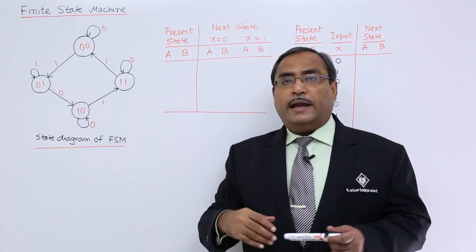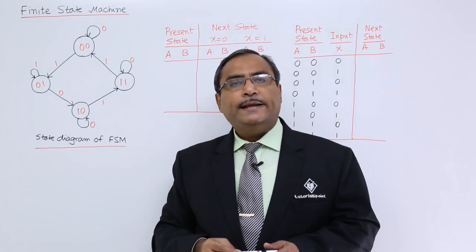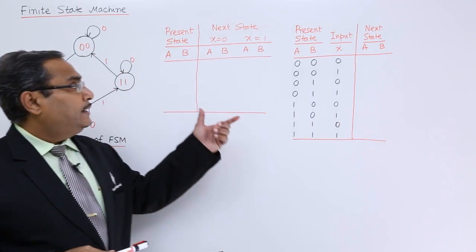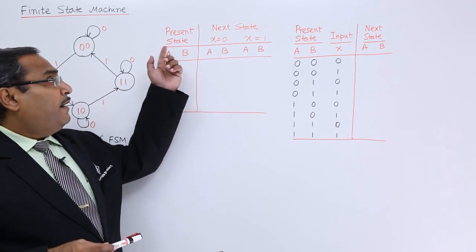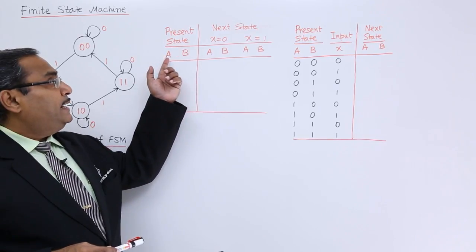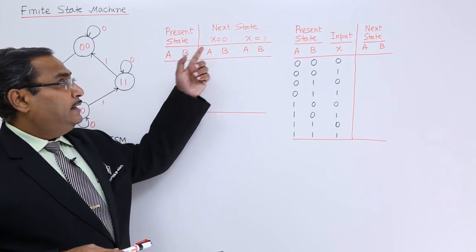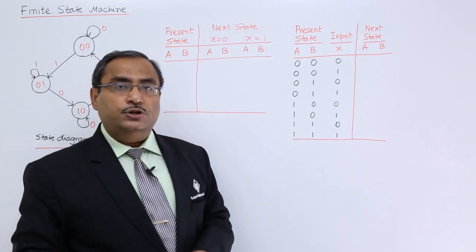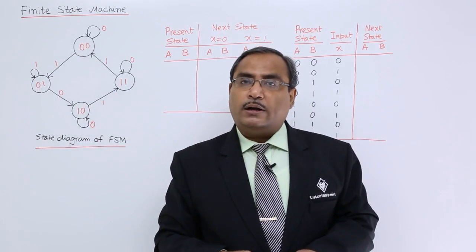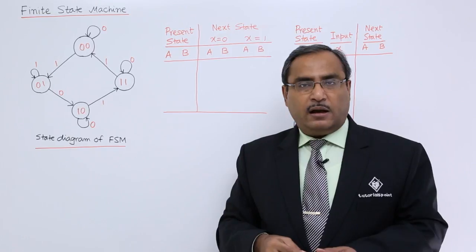This state diagram can also be represented in a table. Here you can find that we are having the headings like present state which is being represented by A and B, and then next state for x equals 0 and for x equals 1. This table is incomplete.